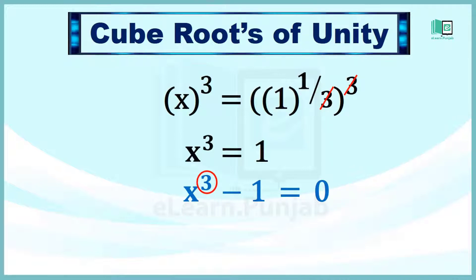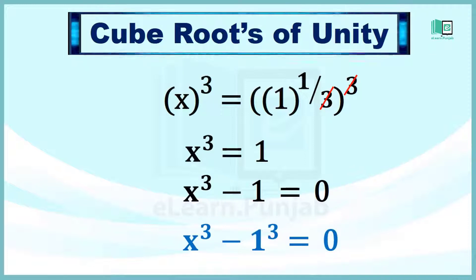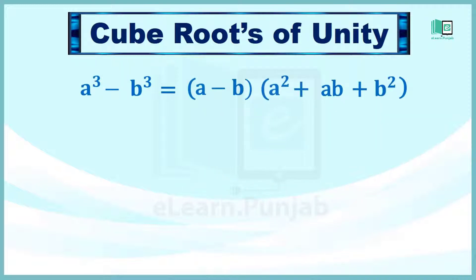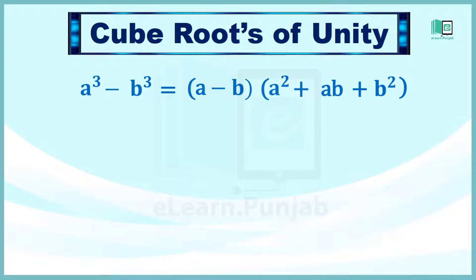इस equation में x की ज्यादा से ज्यादा power 3 है, इसलिए इसके तीन roots होंगे। इसको x cube minus 1 cube is equal to 0 भी लिख सकते हैं। अब cube का formula दोहराएंगे जो कि a cube minus b cube is equal to a minus b into a square plus ab plus b square है। इसको identity कहते हैं क्योंकि ये variable की तमाम values के लिए बराबर होता है।